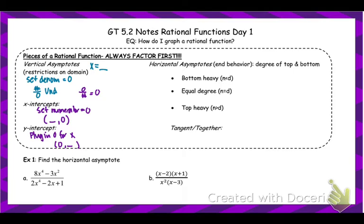Now let's look at horizontal asymptotes. They're not really harder to find — we have some rules. Horizontal asymptotes show the end behavior of our graph, and they're based on the degree of the top and the bottom of our rational function. If the function is bottom heavy — meaning the degree on the bottom is higher — the horizontal asymptote is y equals zero. If the degree on the top and bottom are the same, we divide the leading coefficients.